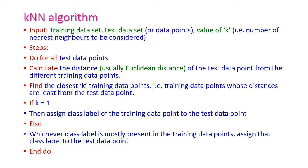Let us see the algorithm of KNN. There are three inputs required. First is the training data set, which is given in the problem itself. Second is the test data set or a single data point to be classified. Third is the value of K — K is nothing but the number of nearest neighbors to be considered.